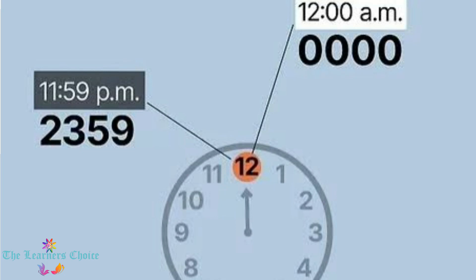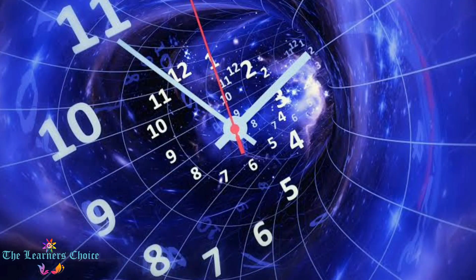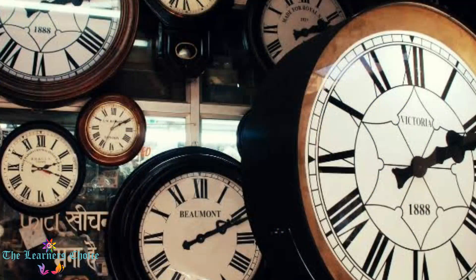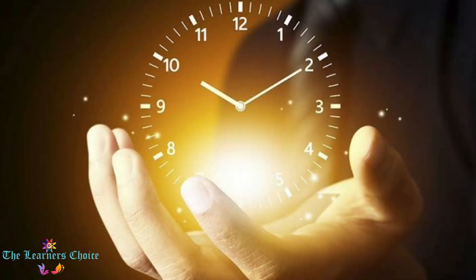The 12-hour time system is a universally known time system, which makes it possible to read the time no matter wherever we are in the world. Also, making a 12-hour time system clock is a bit easier and less expensive than a 24-hour time system clock.